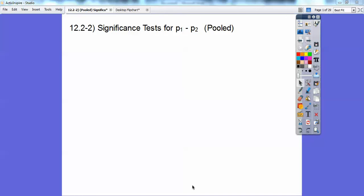Okay, everybody. This lesson is significance test for population proportions, the difference between two. So this is called pooled. So this is where we're going to go swimming. Let's go ahead and dive in.